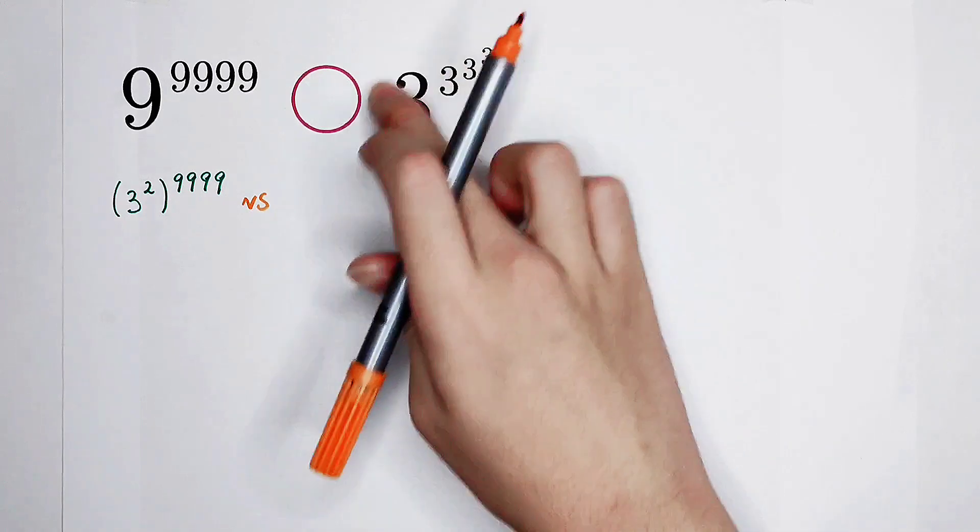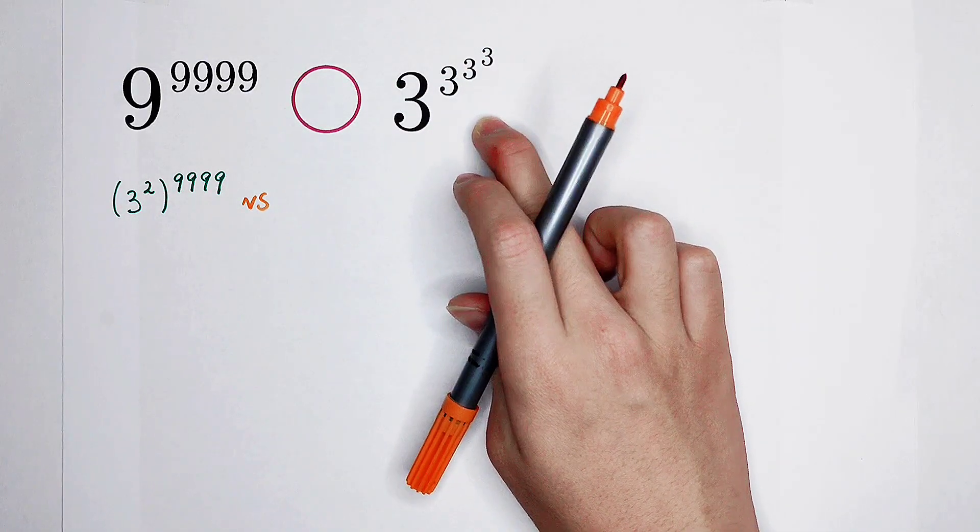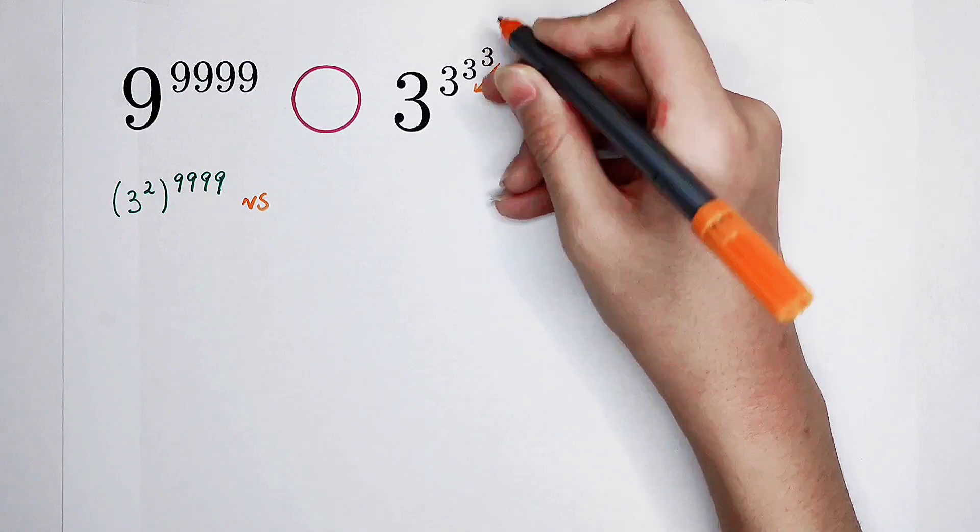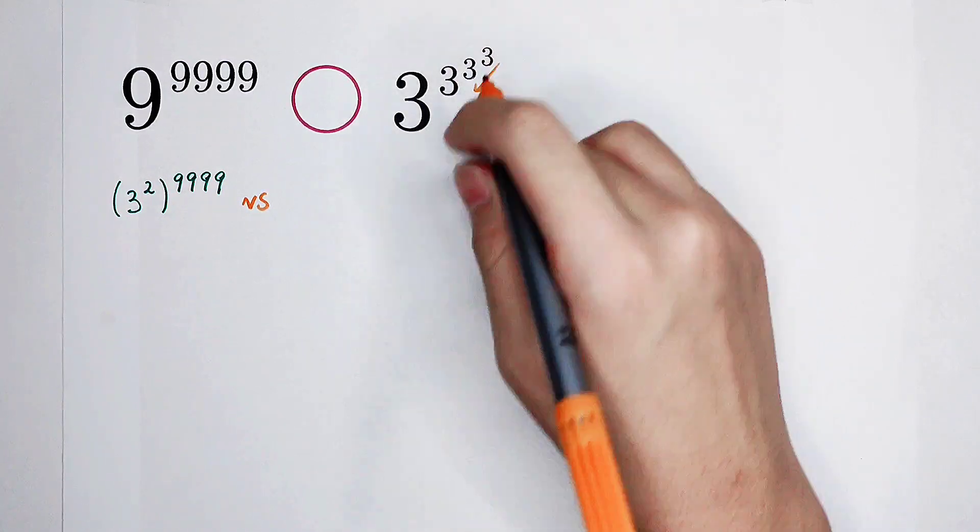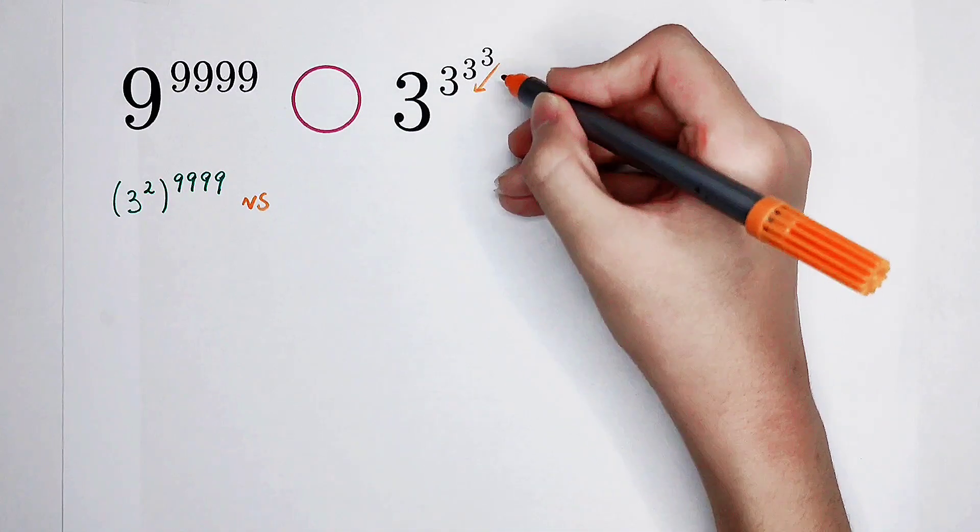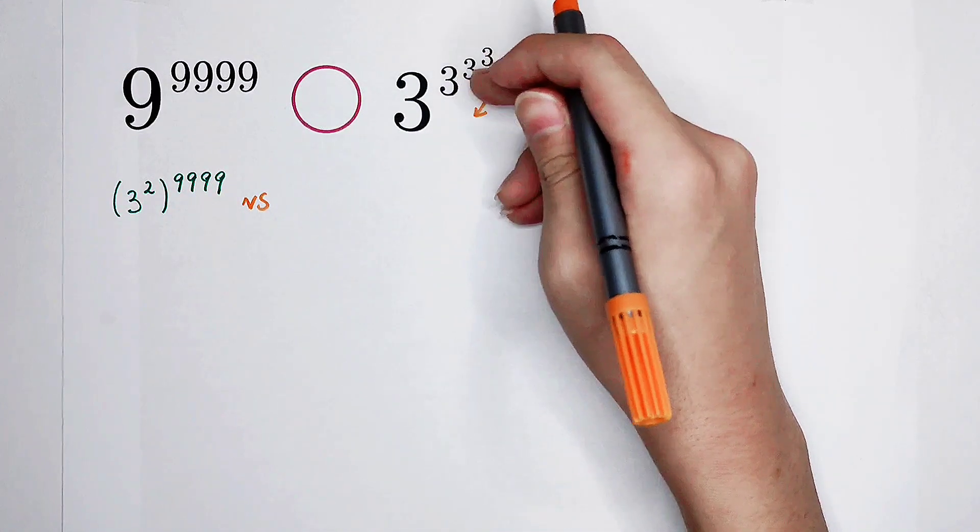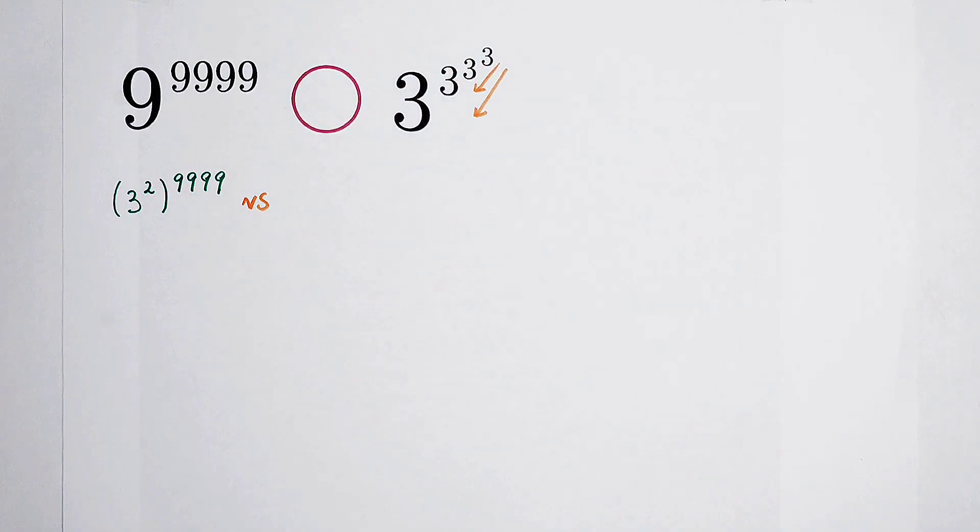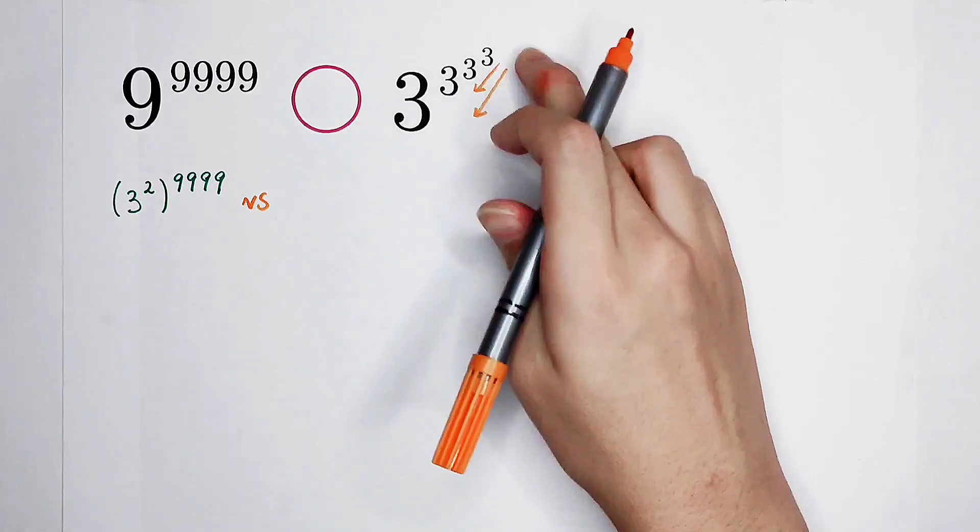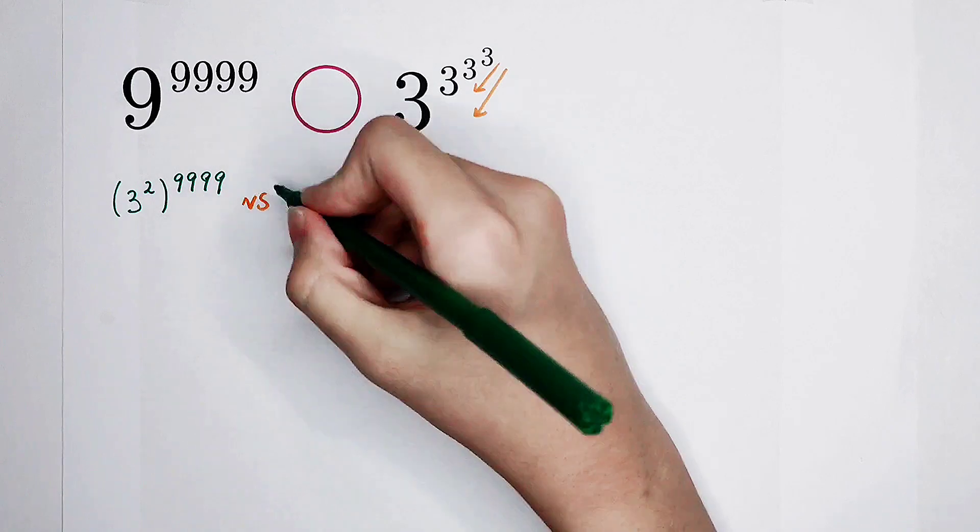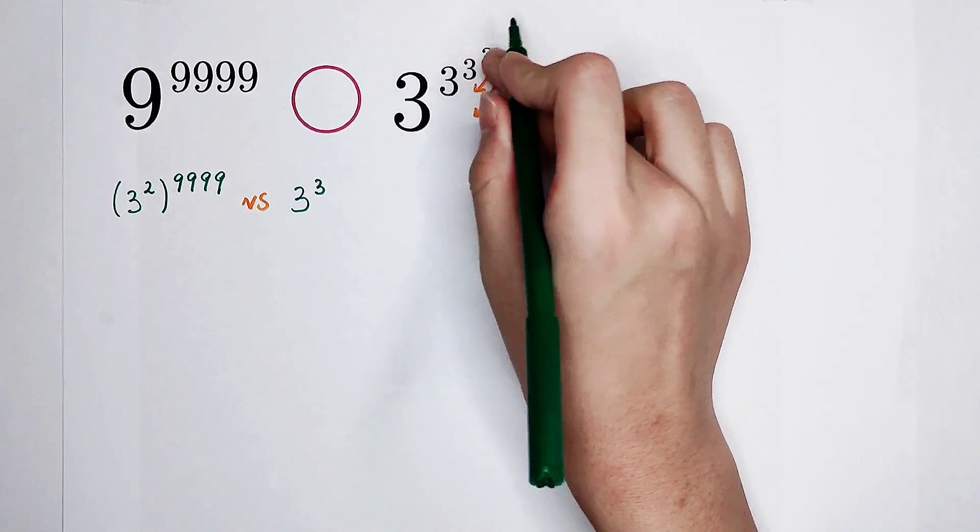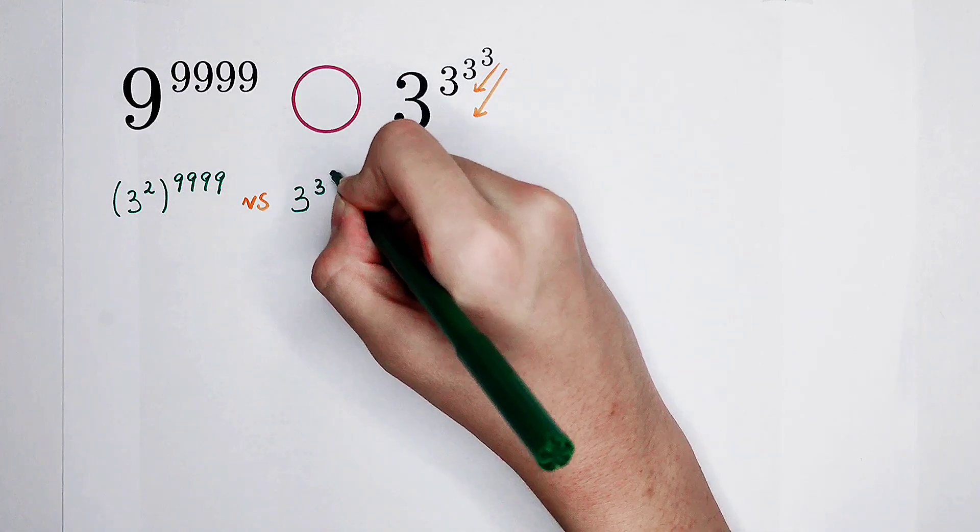For calculating the right-hand side, our order is to calculate 3 to the power of 3 first. This is the exponent of this 3. And then, we should calculate 3 to the power of 3 to the power of 3. And then, this is the exponent of 3. So we have to calculate the right-hand side from the top to the bottom. So the right side is 3 to the power of 3 to the power of 3, so 3 to the power of 3 is 27.